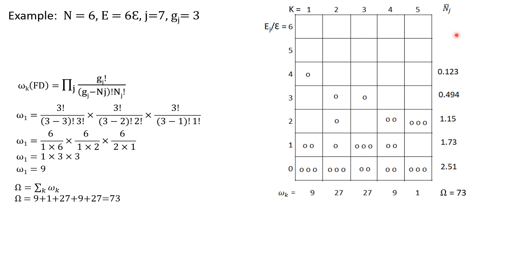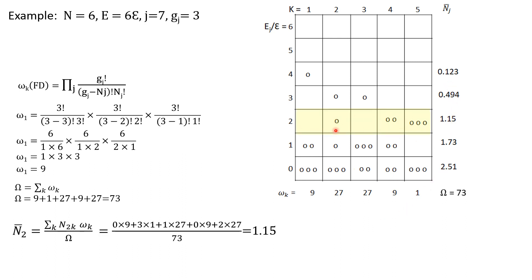You can also calculate the average occupation number of each energy level. The average occupation probability of level 2 works out to 1.15, which is close to the most probable value, confirming that this energy level reflects the equilibrium properties of the system. This was all about Fermi-Dirac statistics. I hope you understand it, as it is quite simple compared to the Bose-Einstein distribution. The next lecture will cover Maxwell-Boltzmann statistics. Thank you.